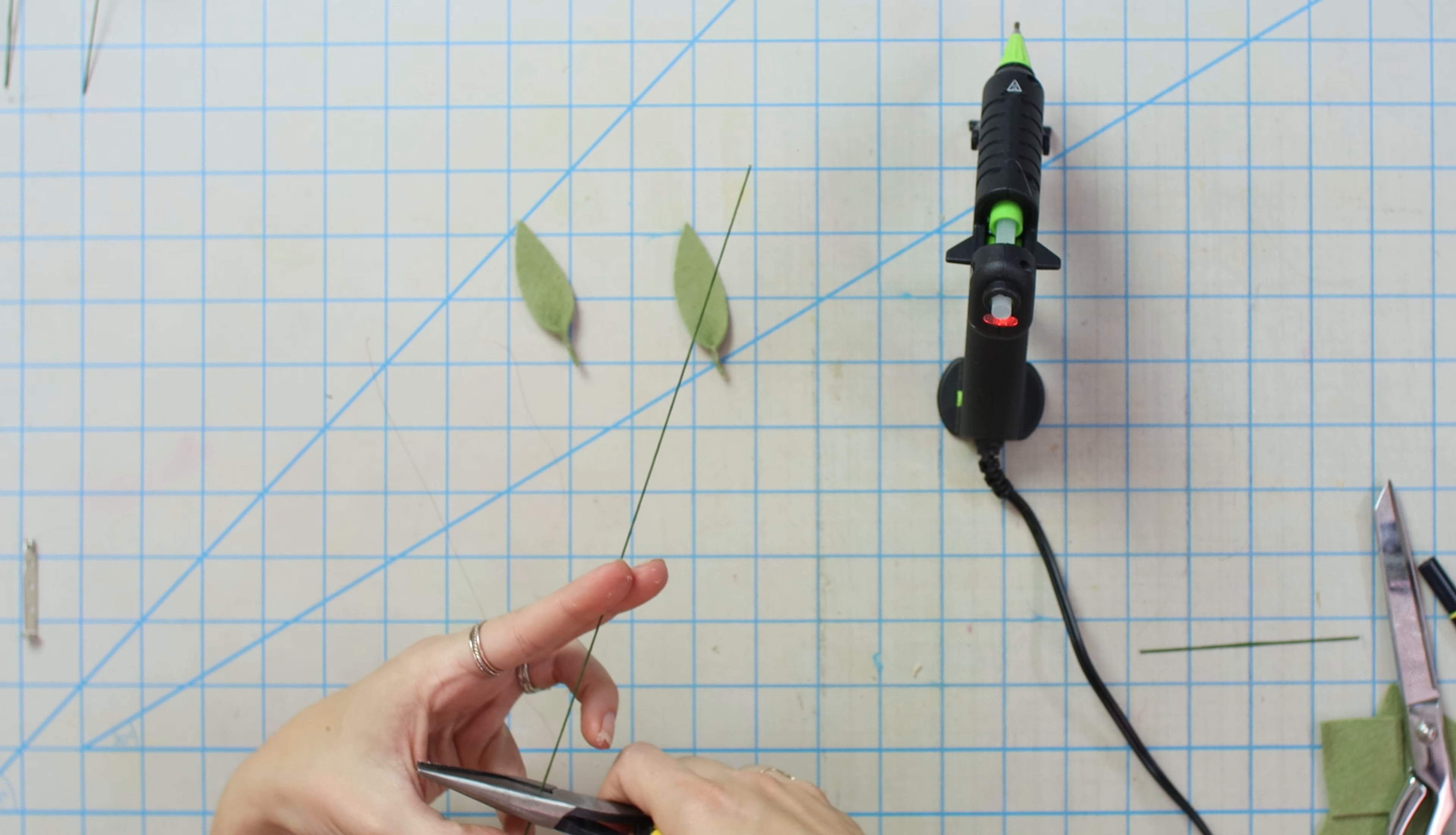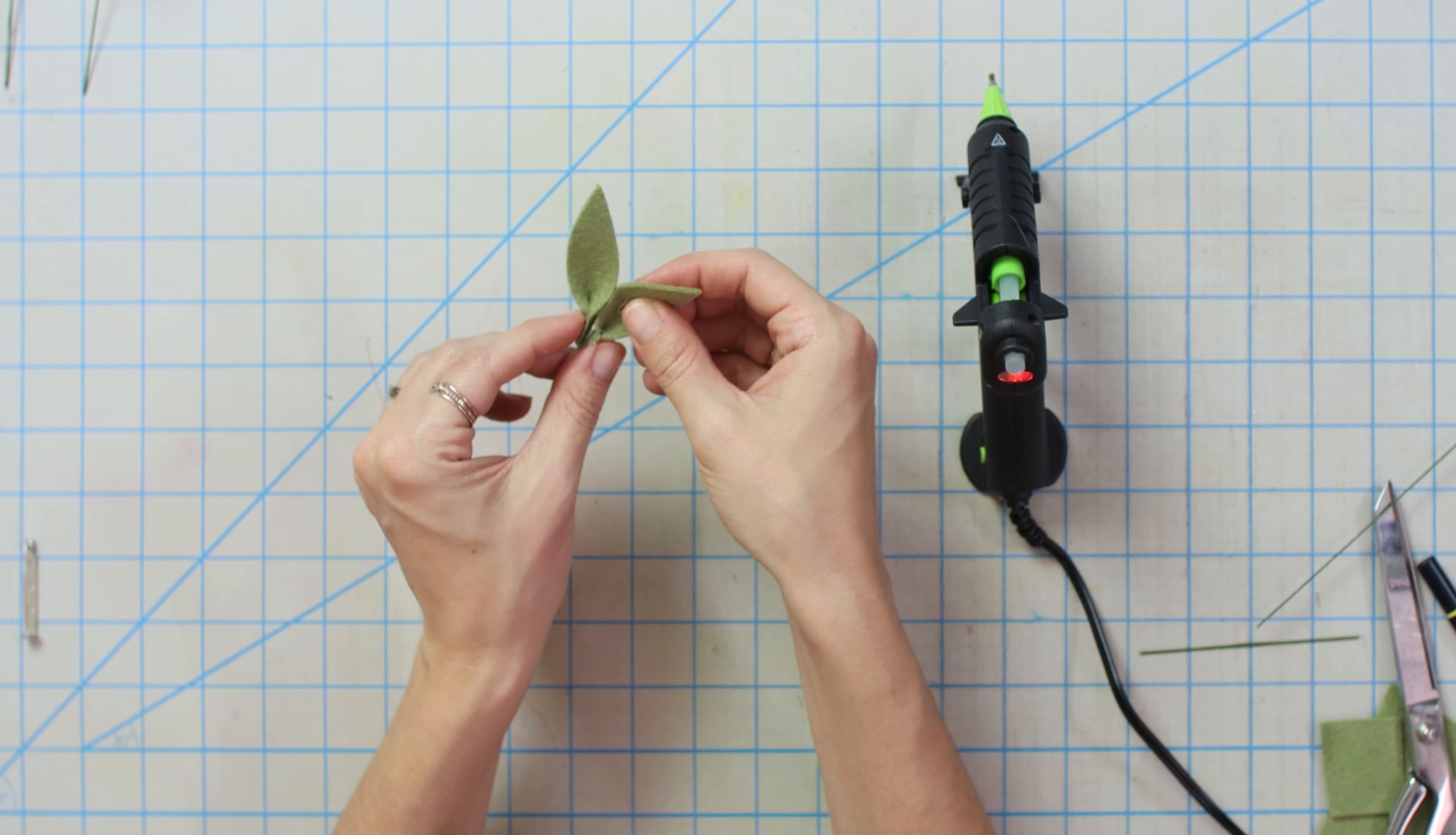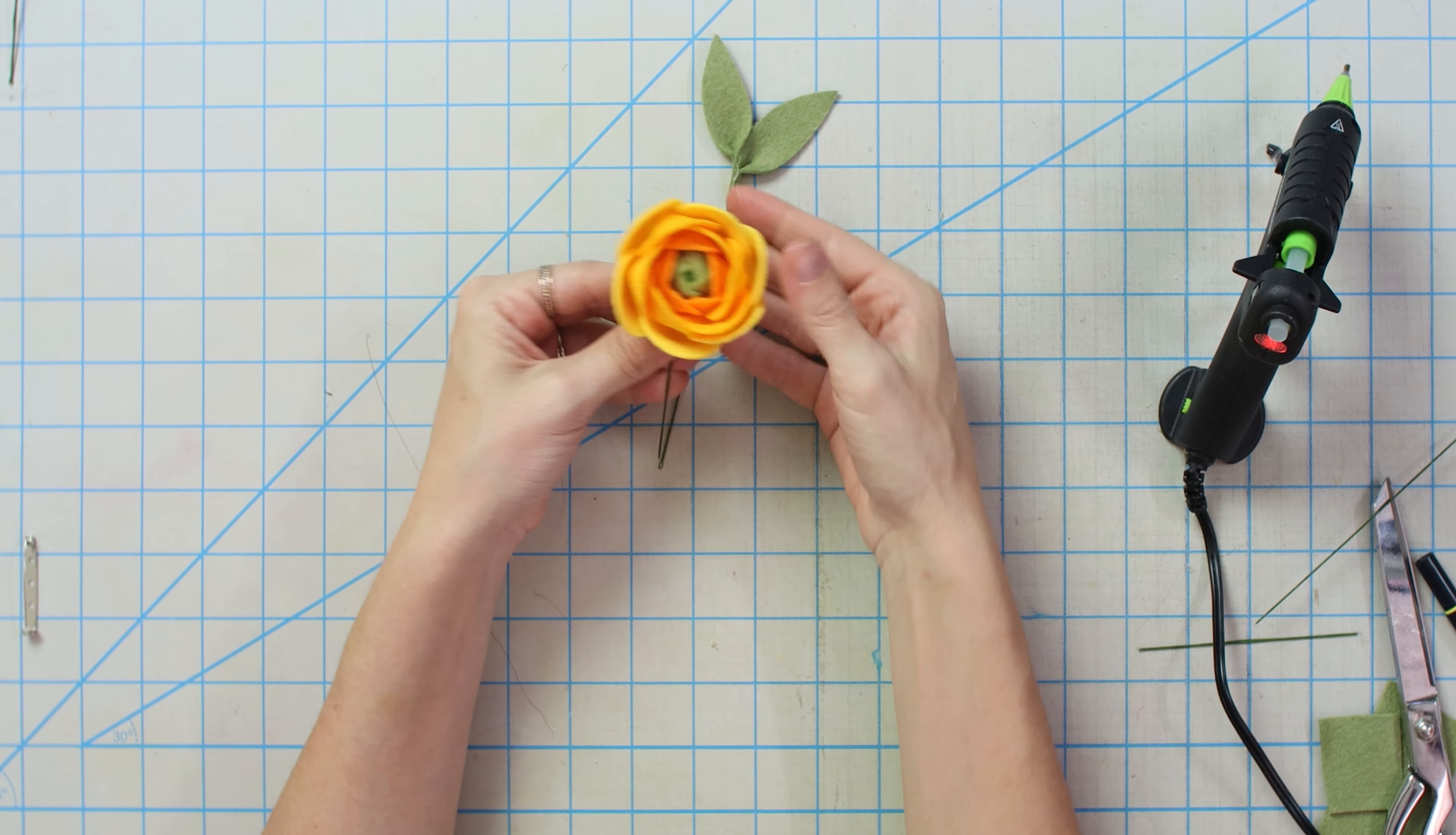And then, the way we're gonna assemble these on a wire, is we're going to get another piece of wire. Another like five inch piece. And we're gonna glue this on one side and then sandwich it with the other leaf. I'm just gonna put my wire here. A little bit more glue. And I'm actually gonna go a little bit lower. I'm not gonna make it perfectly parallel with each other. So one is a little bit lower than the other.